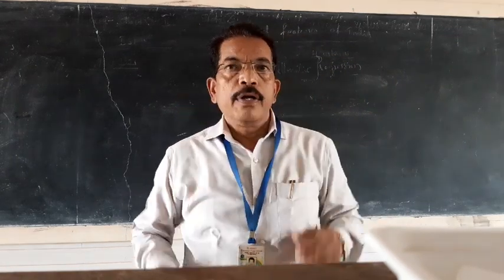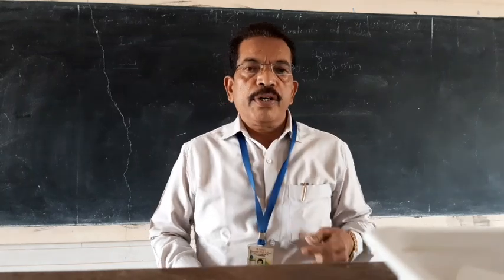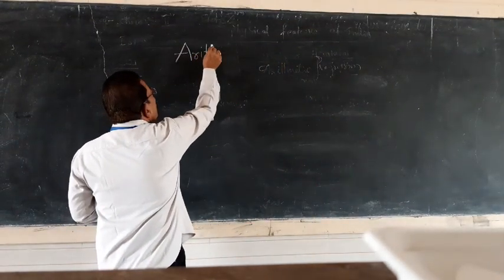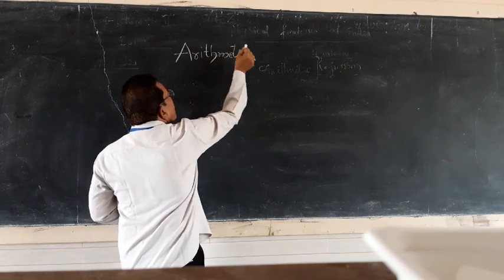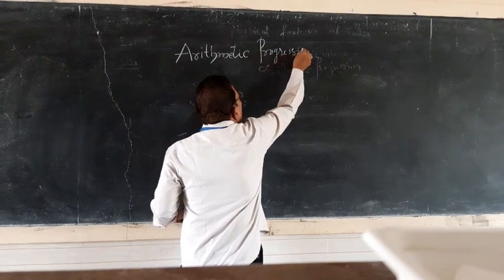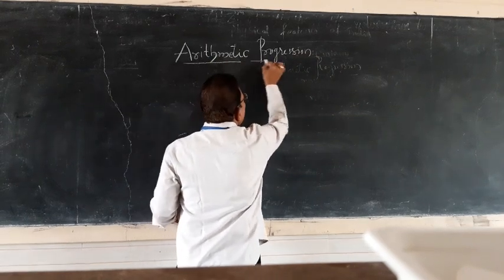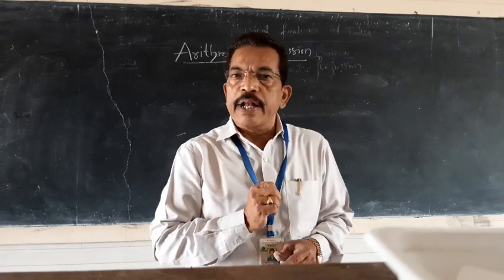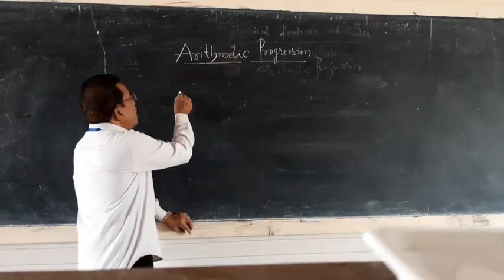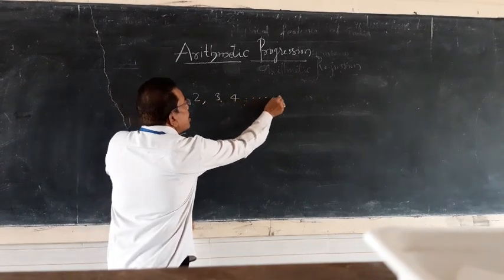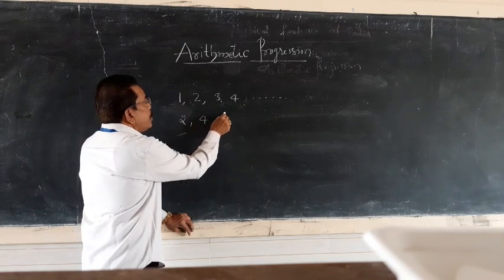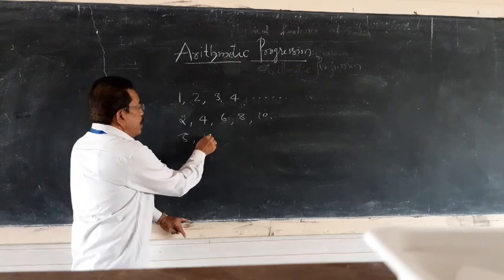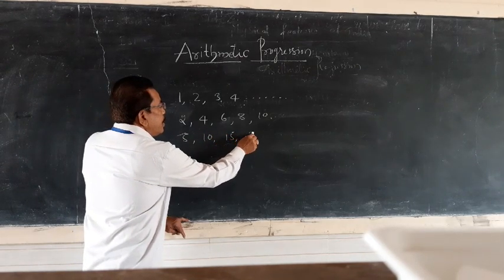Good afternoon, dear students. Today let us begin the first chapter: Arithmetic Progression. In our daily life we come across certain sets of numbers, for example: 1, 2, 3, 4; then 2, 4, 6, 8, 10; then 5, 10, 15, 20, 25.